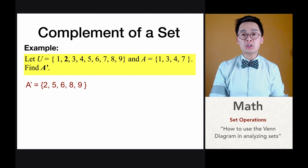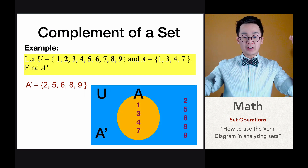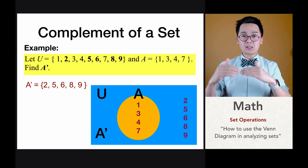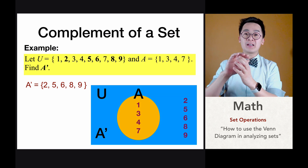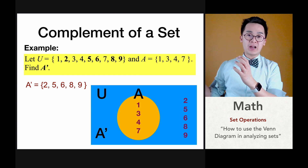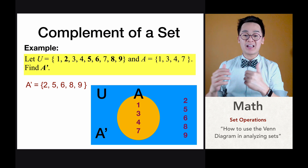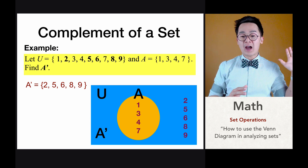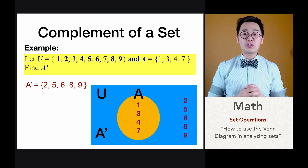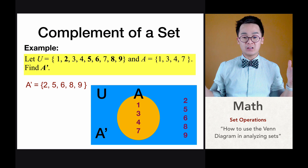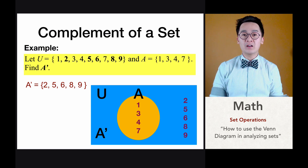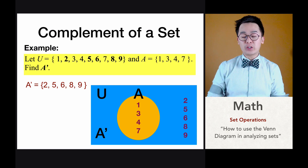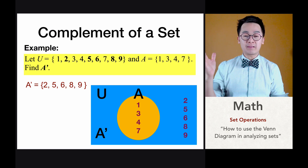If we draw a Venn diagram representing the complement of A, we have a union set where subset A contains 1, 3, 4 and 7. The complement is outside the circle of subset A — so you will see 2, 5, 6, 8 and 9 outside the circle but still within the union set. This is how we represent the complement of a set in a Venn diagram.